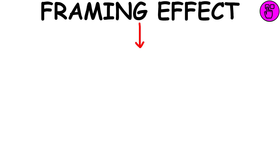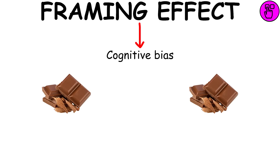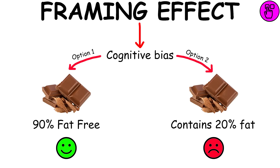Framing effect. The framing effect is a cognitive bias in which people decide between options based on whether the options are presented with positive or negative connotations.